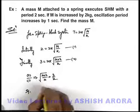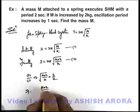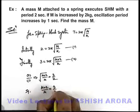If we square it, we'll be getting (M+2)/M = 9/4.